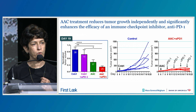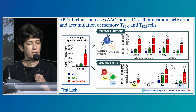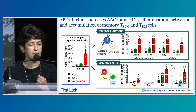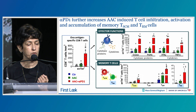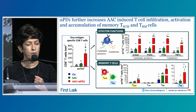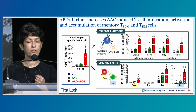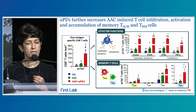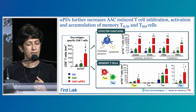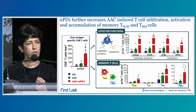Looking at the immune landscape within the tumor: tumor antigen-specific CD8 T-cells increase with AAC alone, and when AAC and anti-PD-1 are combined, that increases significantly further. Within those T-cells, effector functions such as cytokine production and cytotoxic protein generation are also significantly increased with the combination, creating a feed-forward cycle of anti-tumor immunity. Memory T-cells are also increased—T-stem cell-like central memory cells and T-resident memory cells—both associated with very good anti-tumor immunity in human cancers and preclinical mouse models.